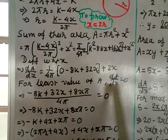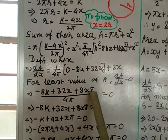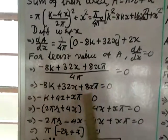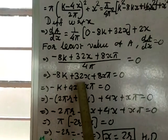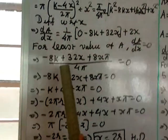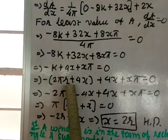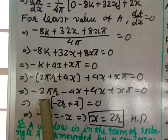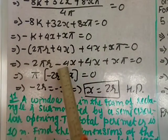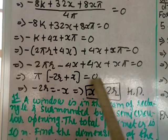For the least value, set dA/dx = 0. Taking LCM of 4π and simplifying: −8k + 32x + 8πx = 0. Dividing through by 8: −k + 4x + πx = 0.